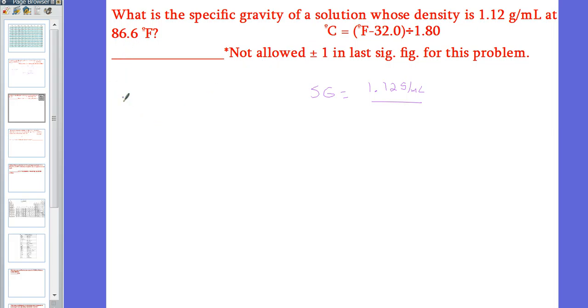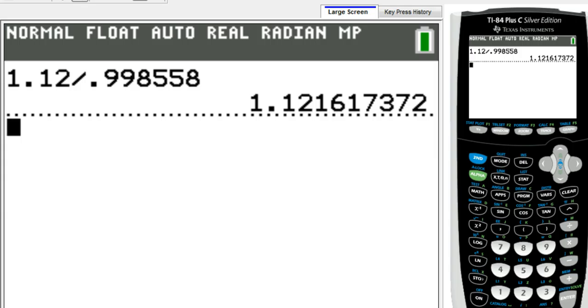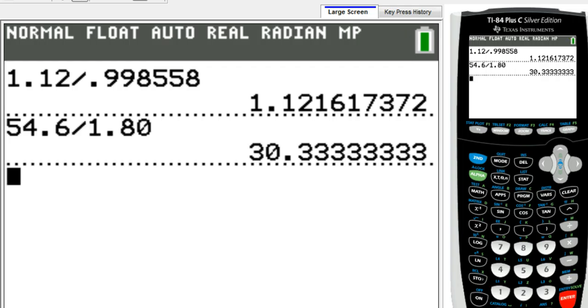So you have to subtract your 86.6 Fahrenheit minus 32, and that's going to be divided by 1.8. So you subtract that and you get 54.6 divided by 1.80. And then just to make sure that we don't make any errors, we're going to do 54.6 divided by 1.80, and you get 30.3 degrees Celsius.